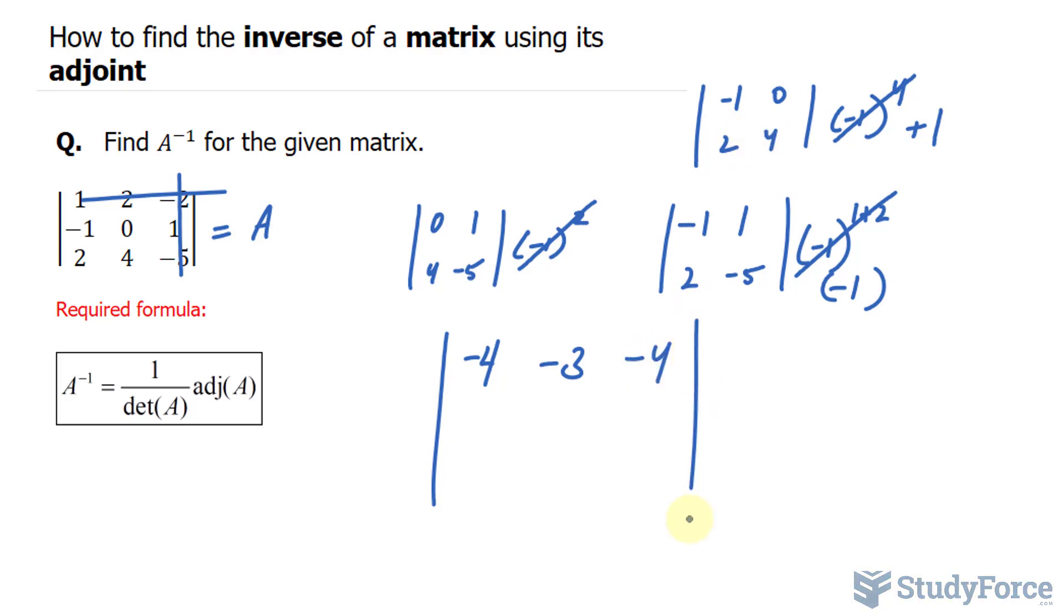If you do this correctly, your final cofactor matrix should look like this. The next step is to transpose the matrix and this will give us the adjunct of A.